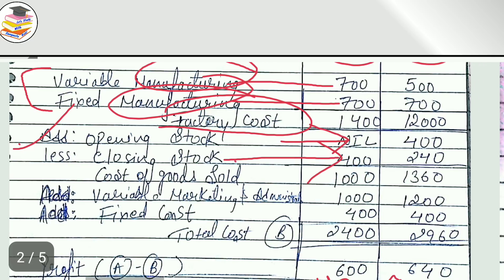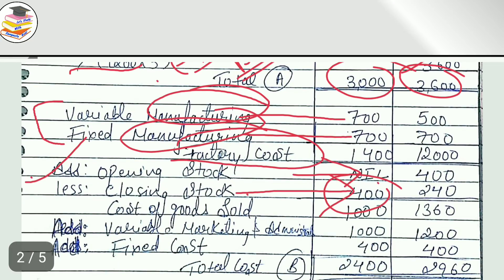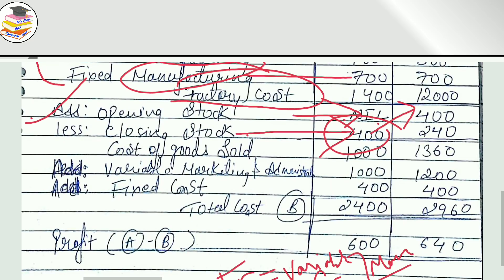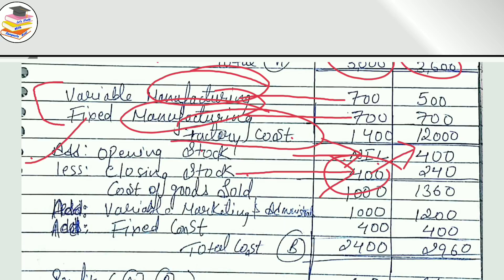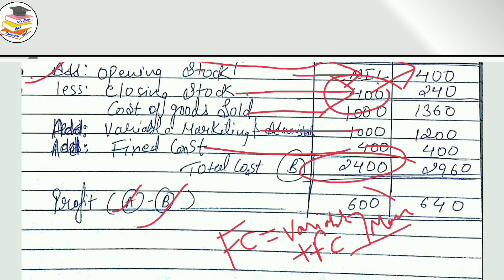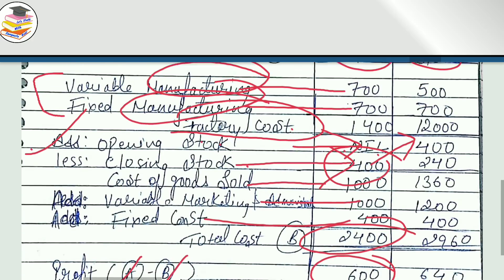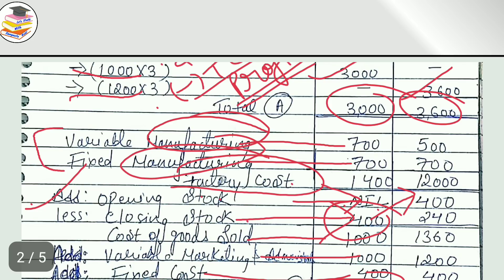Opening stock plus factory cost minus closing stock gives cost of goods sold. Cost of goods sold is Rs. 1,000. Then you add variable marketing, administration, and fixed costs to get total cost, then subtract from sales to get profit.